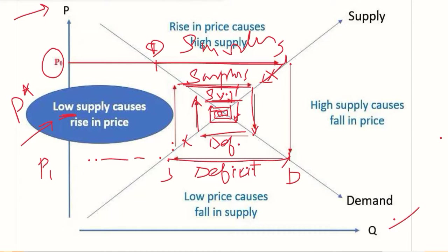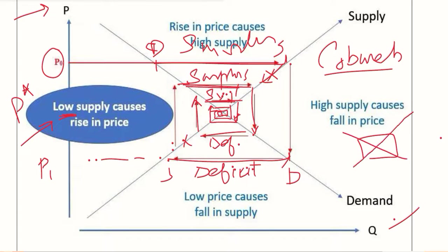This is how a cobweb develops in the diagram — resembling the webs spun by spiders. The resulting diagram looks like a spider's web, which is why we call it the cobweb model.